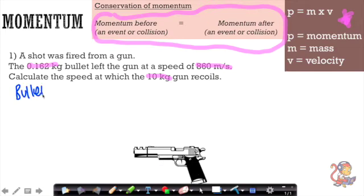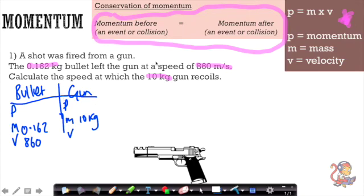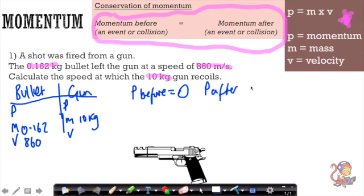Let's lay out the information. For the bullet: mass is 0.162 kilograms, velocity is 860 meters per second. For the gun: mass is 10 kilograms, velocity is unknown. Since the gun and bullet are stationary before firing, this is an explosion — momentum before is zero, and therefore momentum after must also be zero.